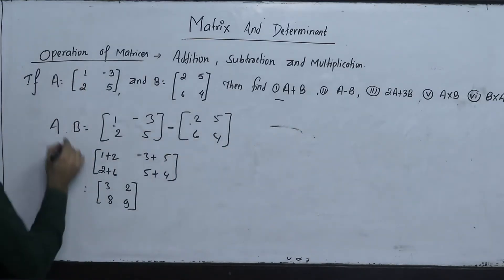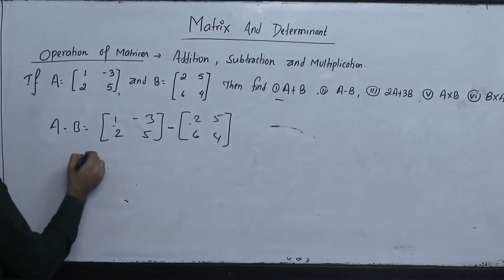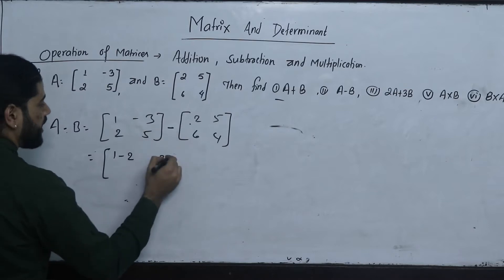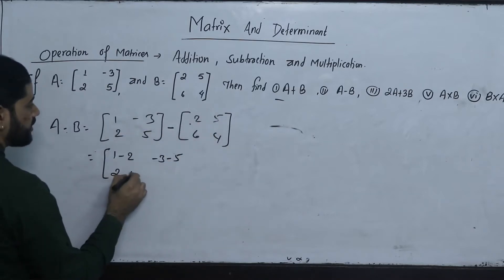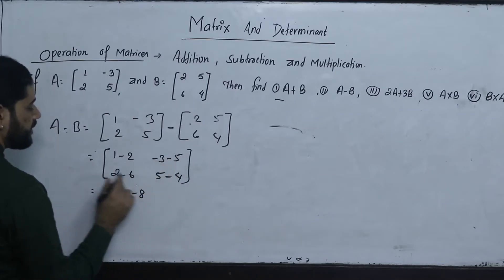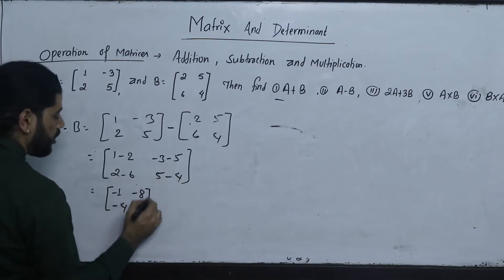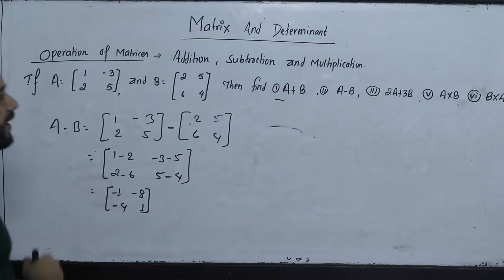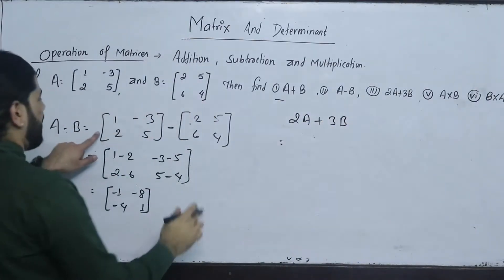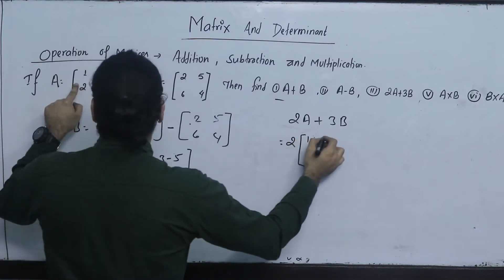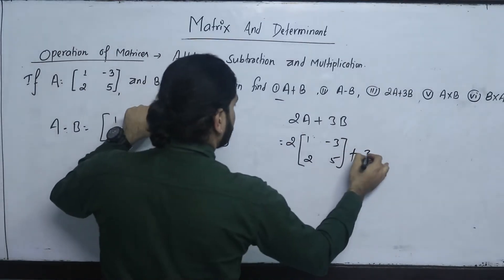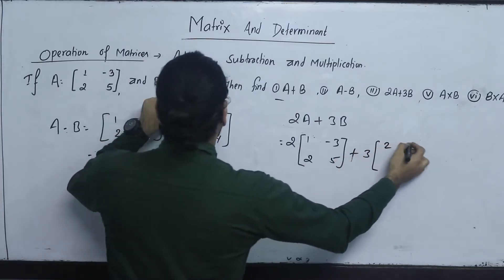So from the matrix, we have: 1, minus 2, minus 3, minus 5, minus 1, minus 6, 2, minus 6, 5, minus 4, 5, minus 4. Then: 1, minus 2, minus 1, minus 3, minus 5, minus 8, and 2, minus 6, minus 4, minus 5, minus 4.